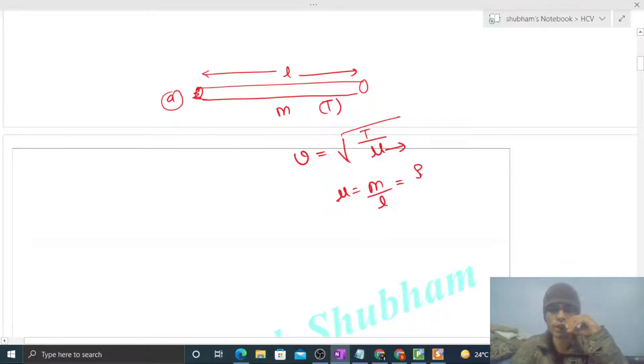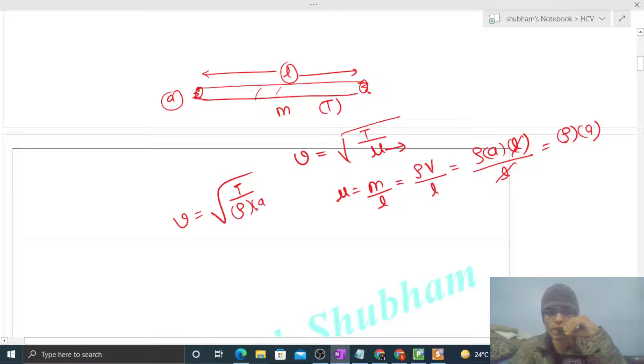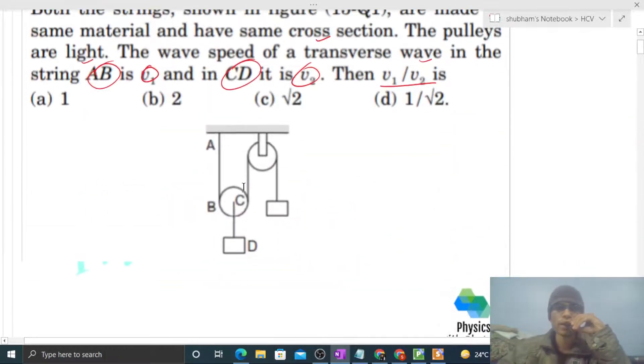Now mass can be written as density into volume, and density of the string into volume will be cross-sectional area into length. Cross-sectional area into length will be the volume of the string divided by L. So L cancels out, so this is simply density into cross-sectional area. So speed is under root of T divided by mu, where mu is density into cross-sectional area. Remember this formula.